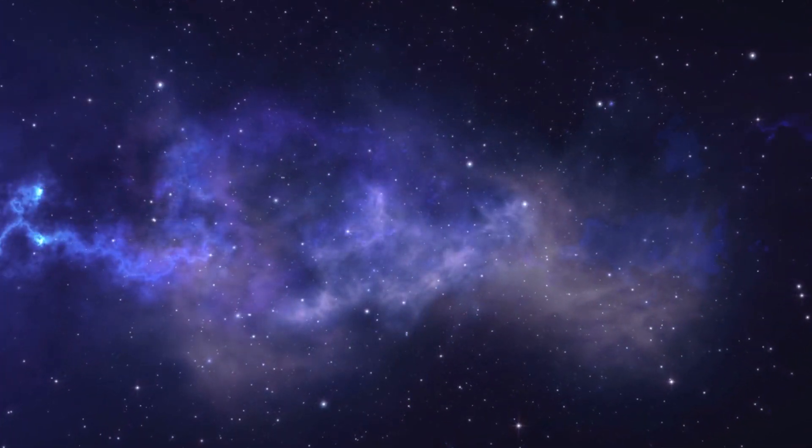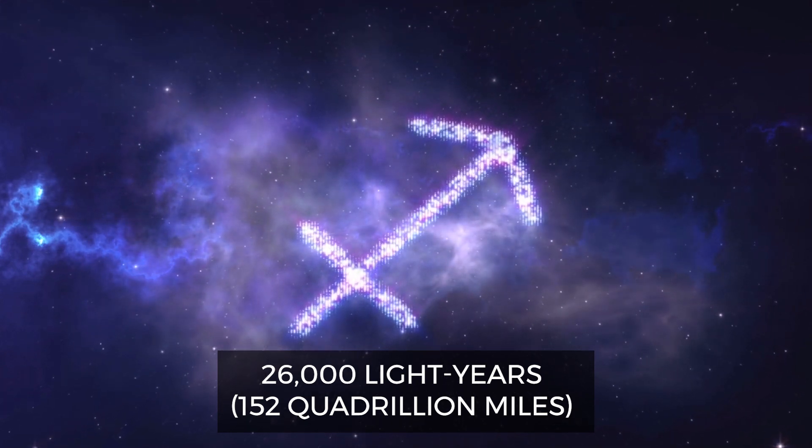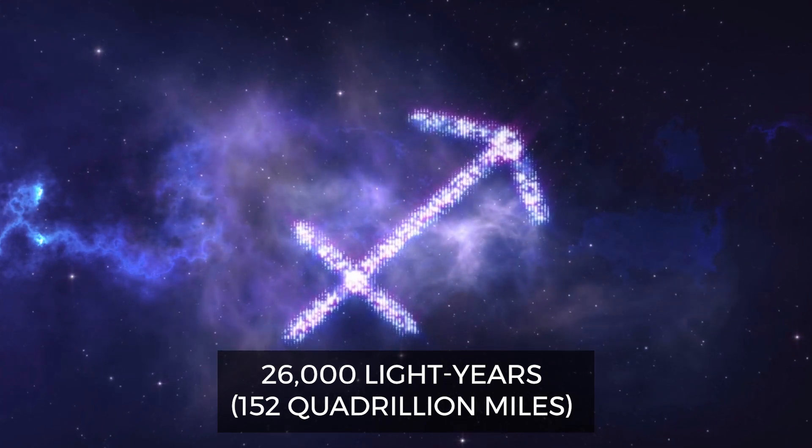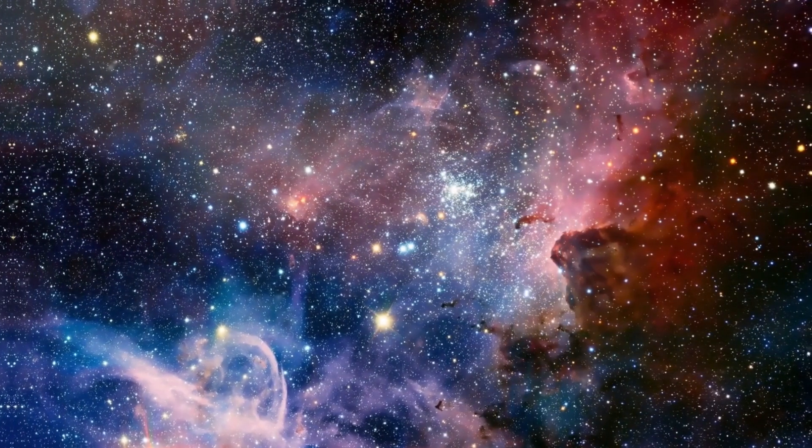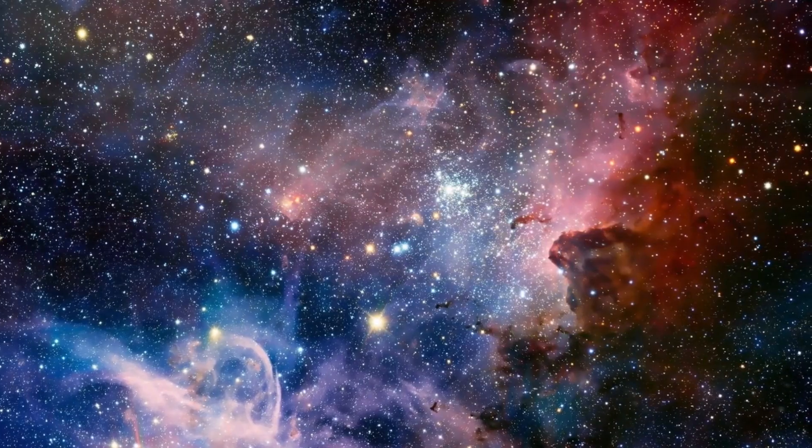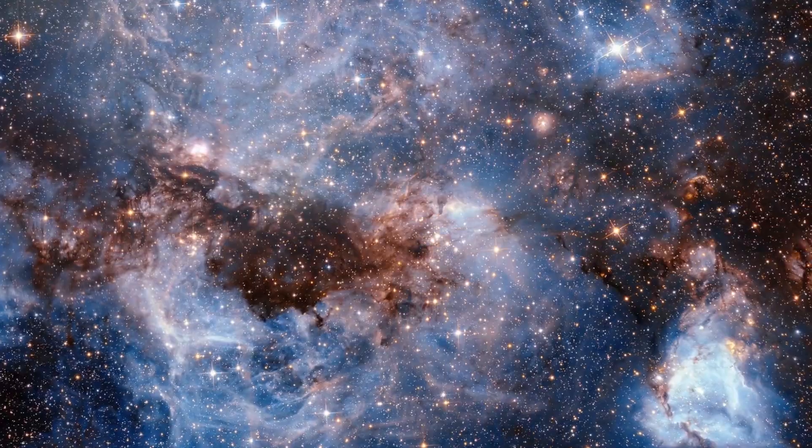Though Sagittarius A is more than 26,000 light years or 152 quadrillion miles away from Earth, it is our closest supermassive black hole. The formation and physical processes influence our galaxy as galactic matter continually crosses the event horizon, growing the black hole's mass.